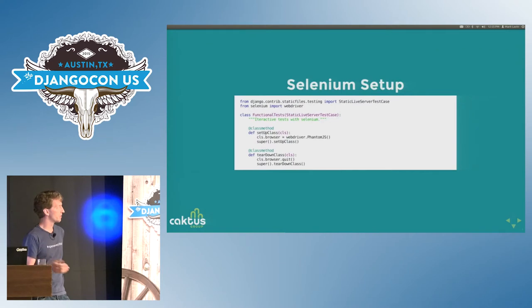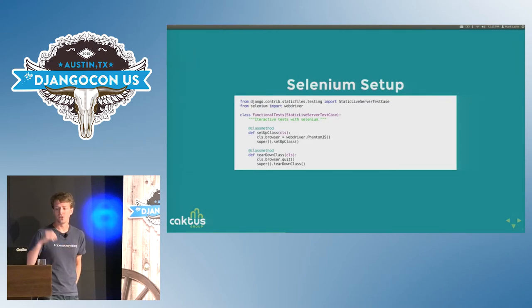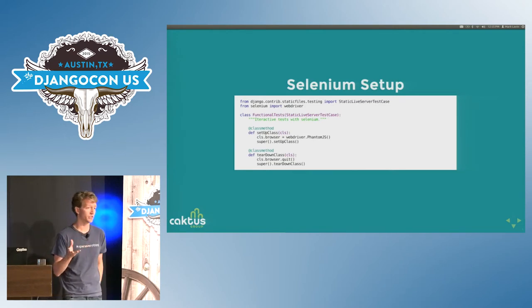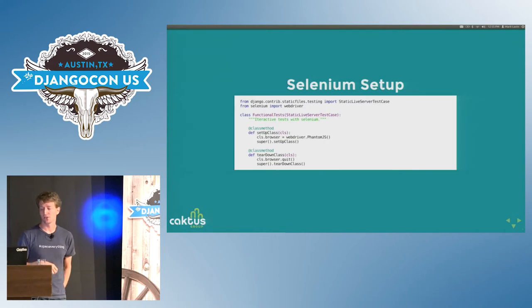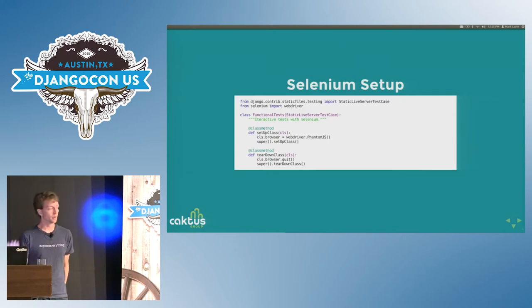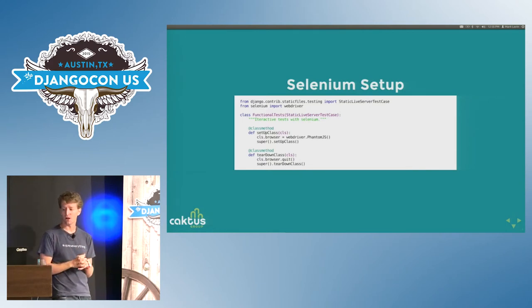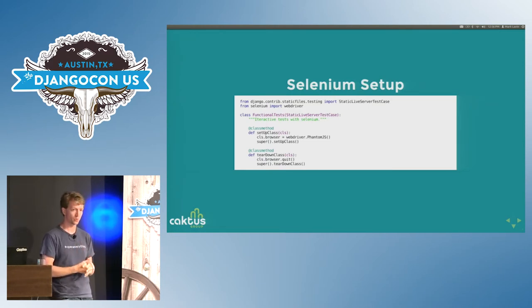Some basic Selenium setup — this almost comes straight out of the Django docs. You use the LiveStaticServerTestCase and do setup and teardown of the Selenium web driver. The setup and teardown can be a little slow, which is why it's done once per class rather than per test. That means you don't get perfect test isolation. I like PhantomJS for the driver — it's a headless WebKit browser you can install with NPM. You could replace it with Firefox, Chrome, or IE. PhantomJS also works well and is installed by default on Travis CI, so it integrates well with CI environments.